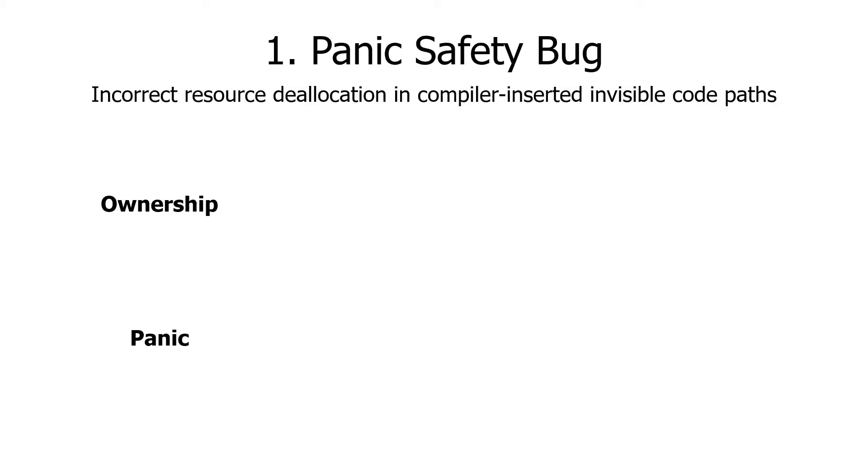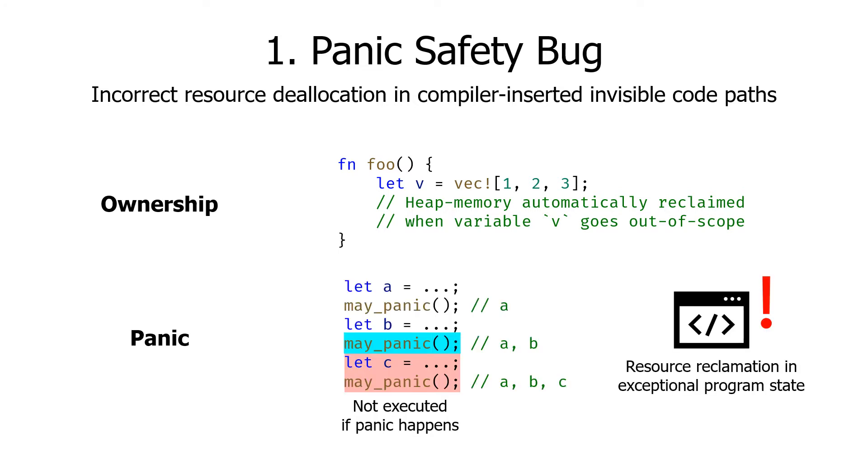The first pattern is called panic safety bug, which is caused by incorrect resource deallocation in compiler inserted invisible code paths. To explain the panic safety bug, I will first introduce two concepts of Rust. The first concept is ownership. It is similar to Resource Acquisition Is Initialization in C++. The Rust compiler assigns an owner variable to each value, and the associated resources are automatically reclaimed when the owner variable goes out of scope.